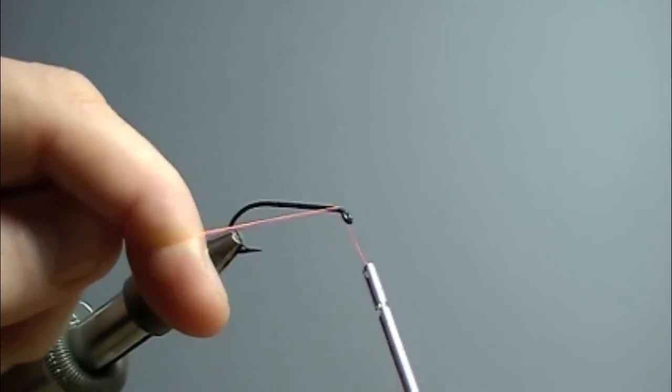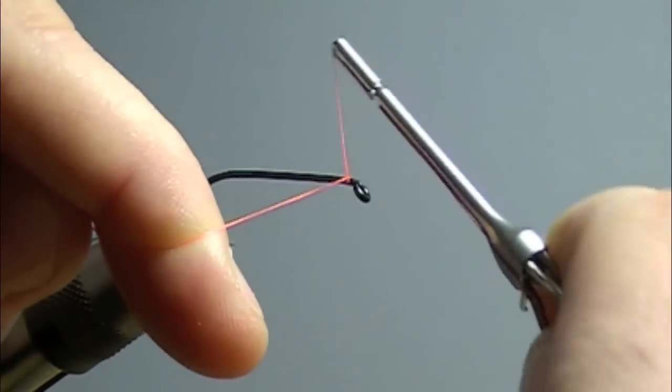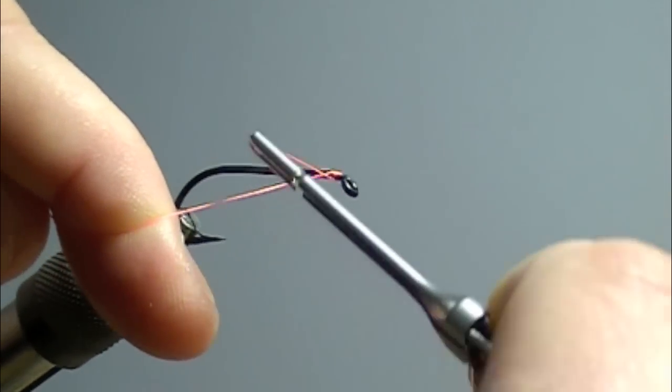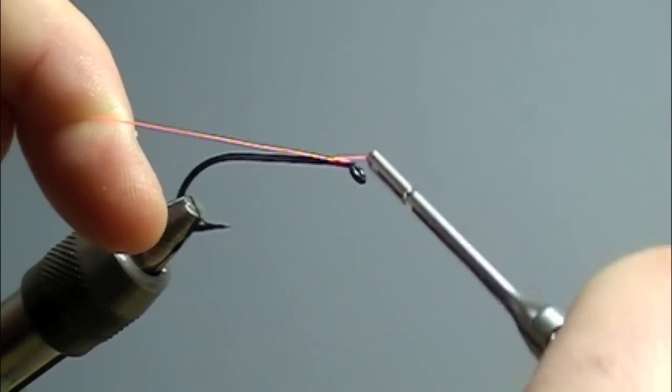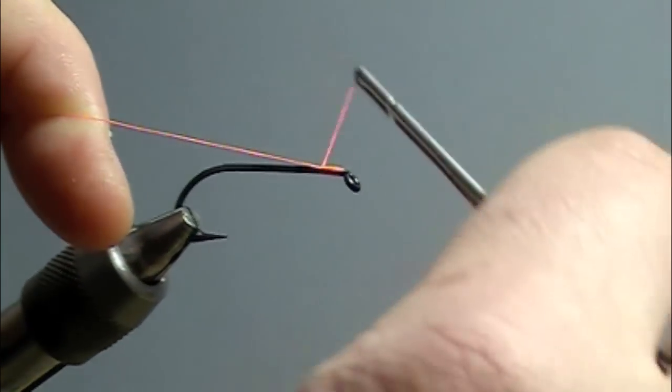My idea is to come around the shank and then wrap over the top of the thread that I just put on there. So each wrap subsequently is behind the last.